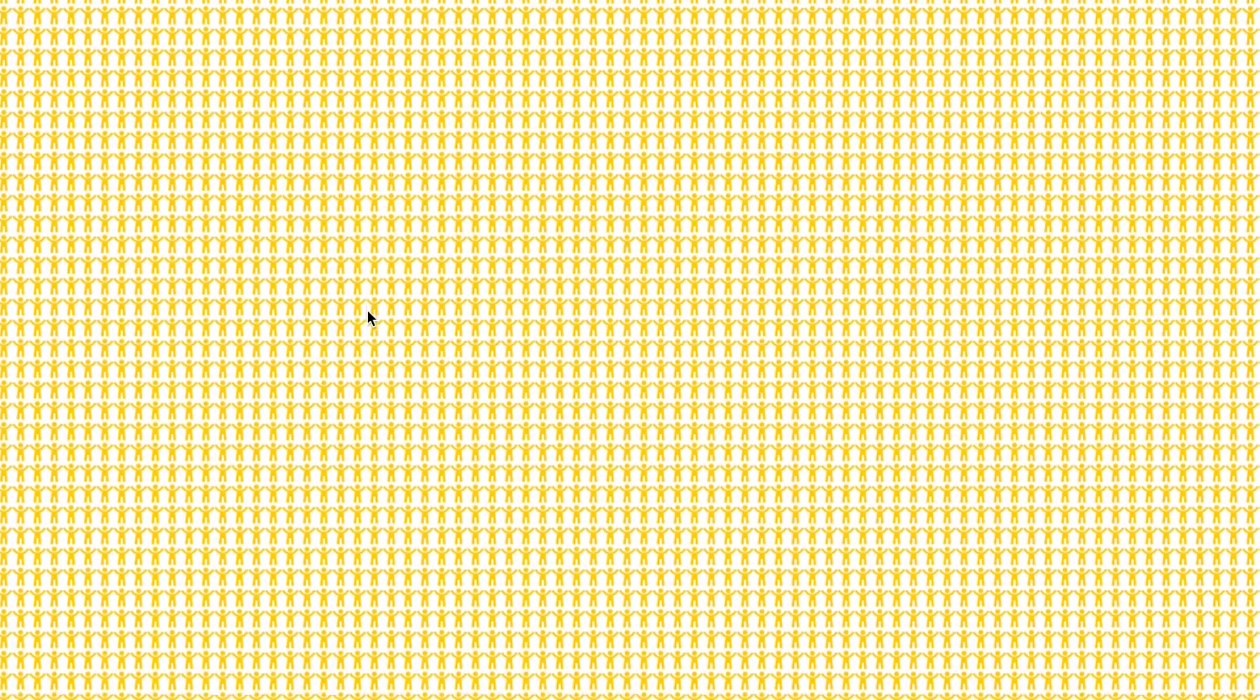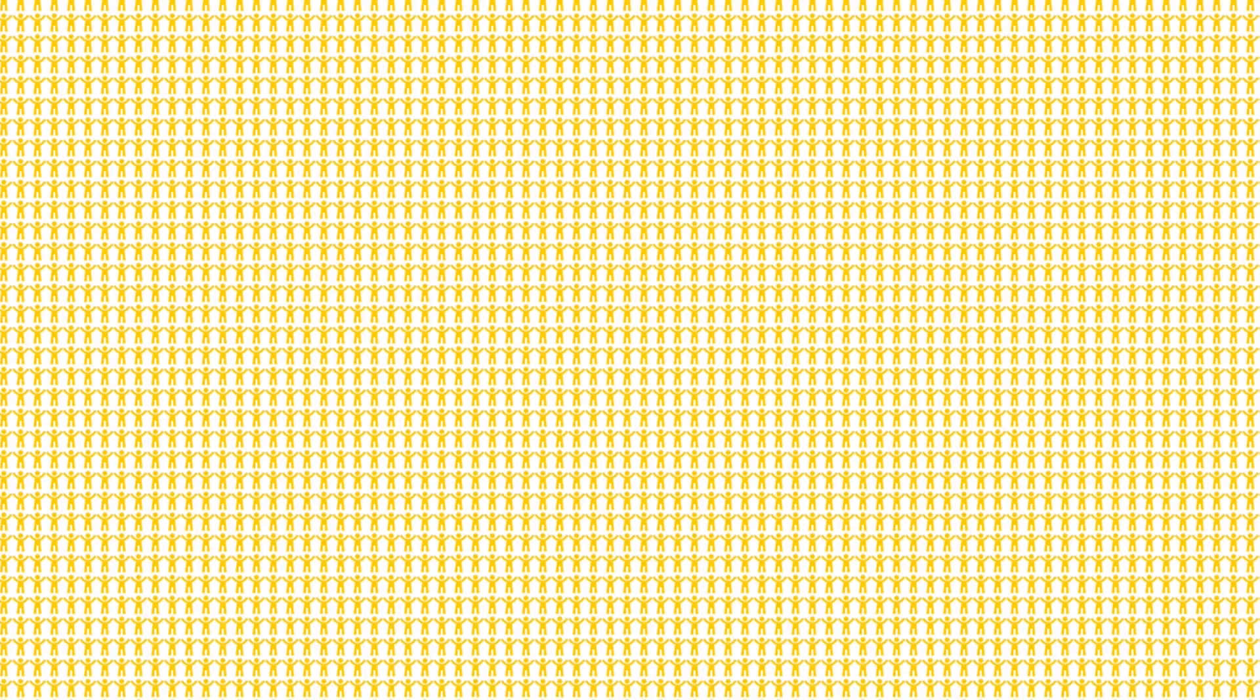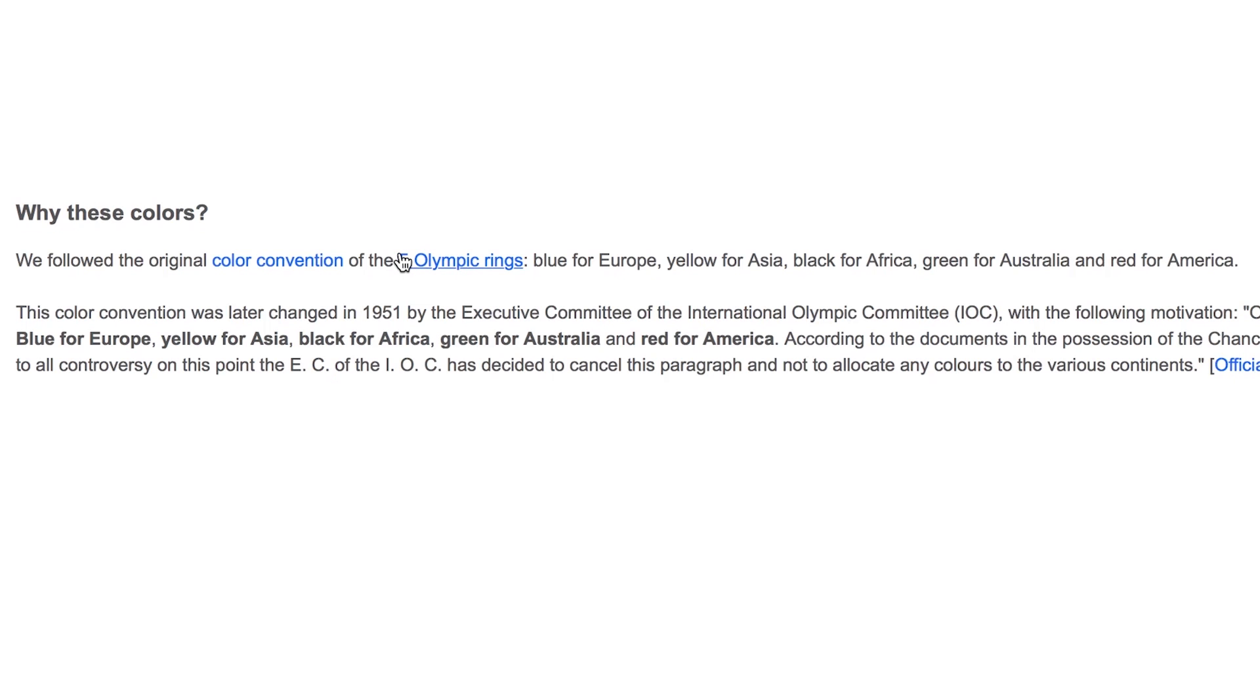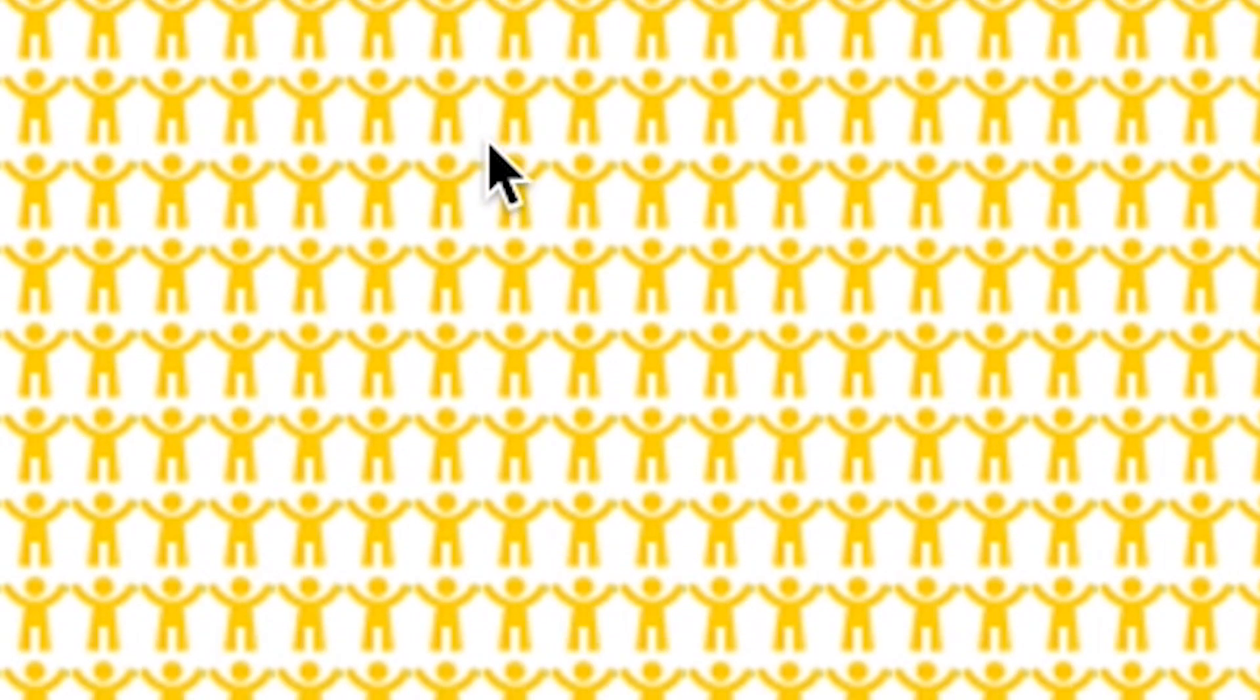the largest webpage on the internet. It includes 7 billion people all in one place and depending on the size of your computer it can be one mile long and 800 feet wide. So it may take a while to get through the whole thing. The different colors follow those of the five Olympic rings and you can see the number of the person you're on. So this page is truly massive,